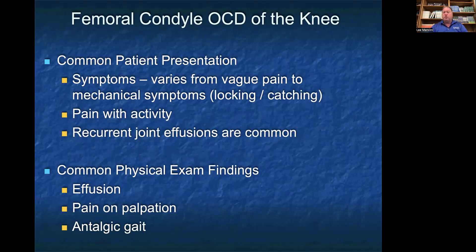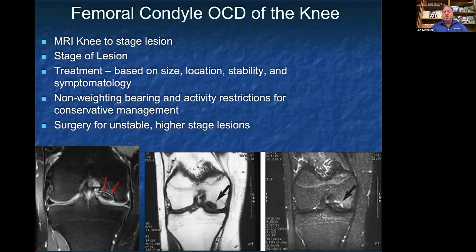On physical exam, usually we'll find a knee joint effusion, pain on palpation over that medial femoral condyle or over the location of the OCD, and they walk with a limp — an antalgic gait. Like with talar dome OCDs, we always get an MRI to stage the lesion. Treatment is based on the size, location, stability, and the patient's symptoms. Typically the first-line treatment is non-weight bearing and activity restriction — you put them on crutches. If it's an unstable or higher-stage lesion, we send them to surgery. On the MRI images, you can see the medial femoral condyle OCD indicated by the black arrow and two red arrows across different MRI sequences.